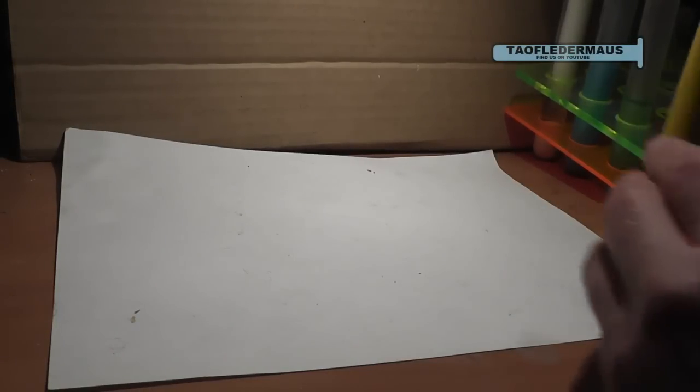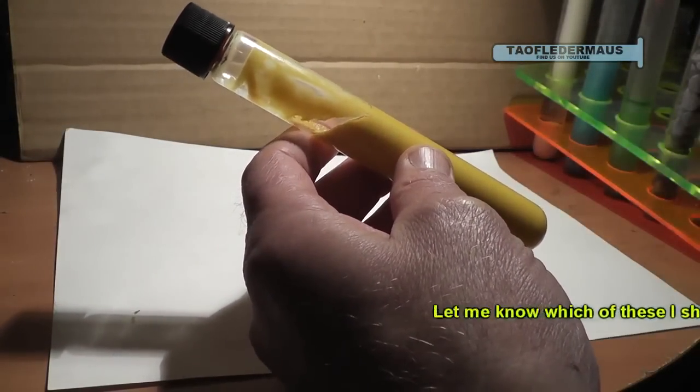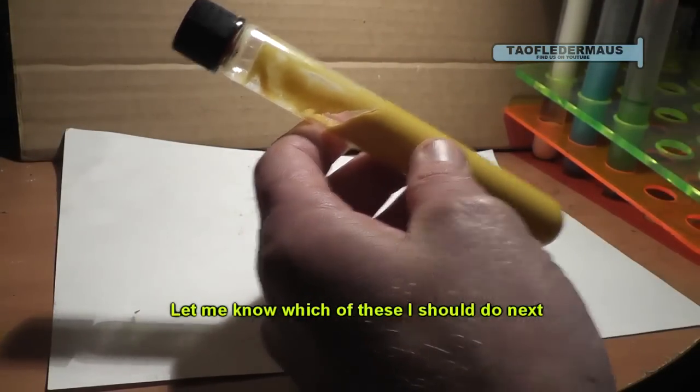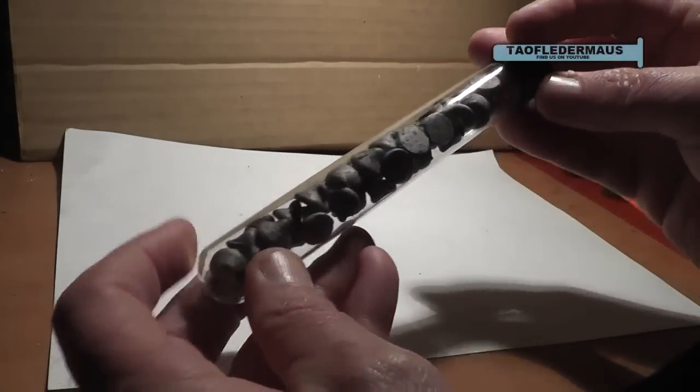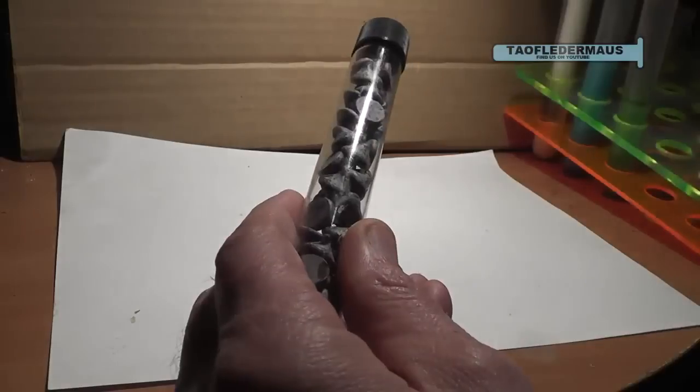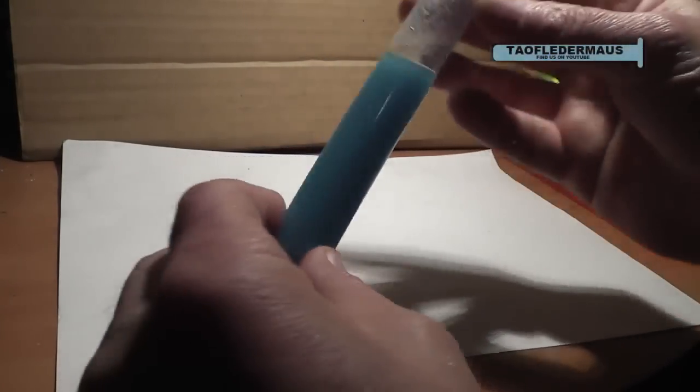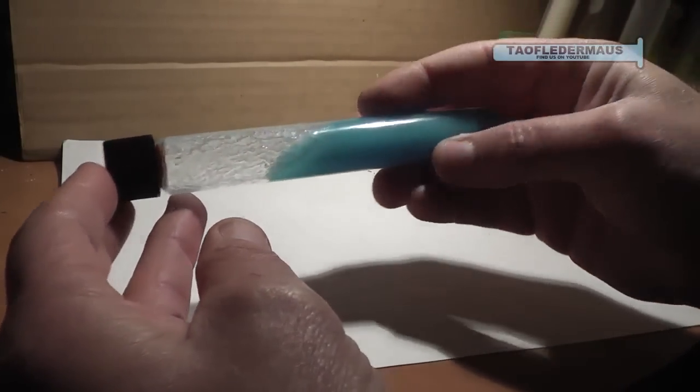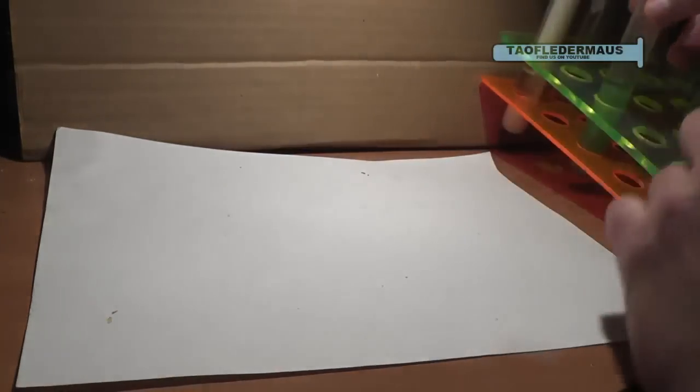Next up is mustard, I think this is French's mustard, I'm not sure what that's going to do, should be fun to see. Another good one here, I'm really anxious to see are chocolate chips, going from a solid to a liquid to a whatever. And then next up is liquid cascade, the automatic dishwashing liquid stuff. Should be interesting, pretty blue color.